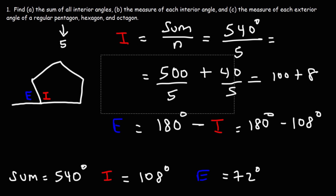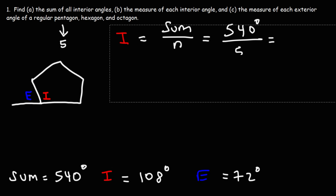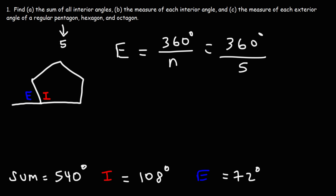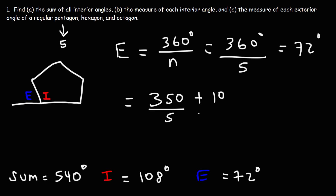There's another way to get the same answer. The measure of each exterior angle is simply 360 degrees divided by n, the number of sides of the regular polygon. So it's 360 divided by 5. Breaking it up mentally: 350 divided by 5 is 70, and 10 divided by 5 is 2, so we get 72 degrees.